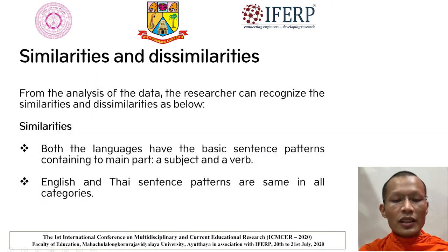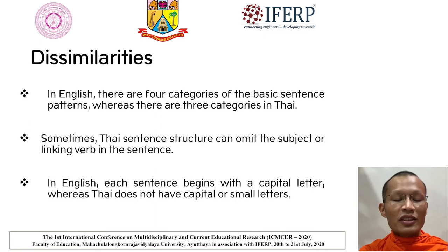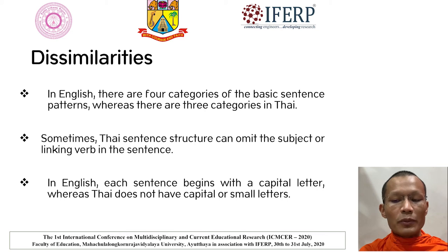From the analysis of the data, the researchers recognized the similarities and dissimilarities as below. Both languages have basic sentence patterns containing two main parts: a subject and a verb. English and Thai sentence patterns are the same in all categories. There are four categories of basic sentence patterns in English, whereas there are three categories in Thai. Sometimes, Thai sentence structure can omit the subject or linking verb in the sentence.